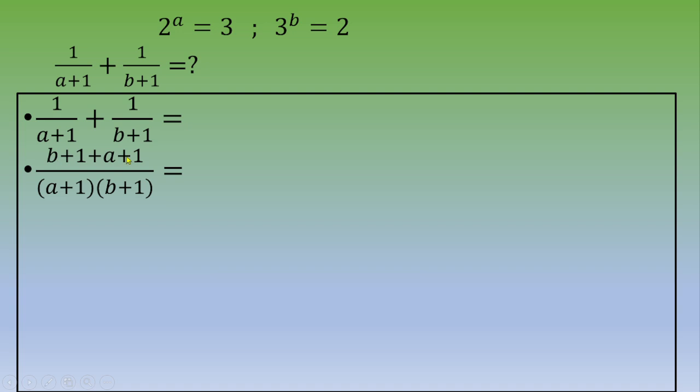If you do the math and distribute, you're going to end up with a plus b plus 2 over ab plus a plus b plus 1, and you're not going to go further than that.